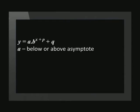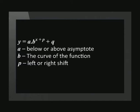A determines the position of the graph relative to the horizontal asymptote. b determines the curve of the function. By looking at the value of a and b together we can see whether the graph is an increasing or decreasing function. p is the horizontal shift and q is the vertical shift.